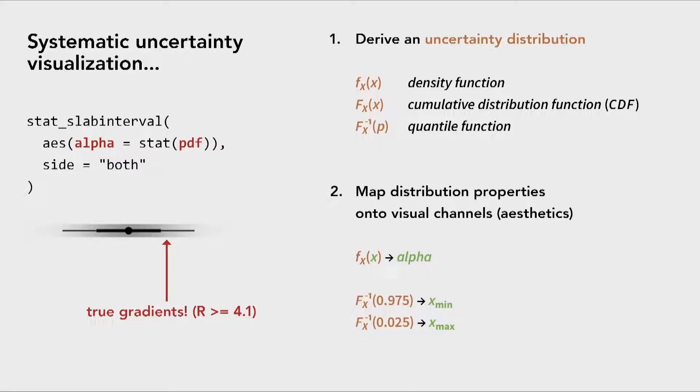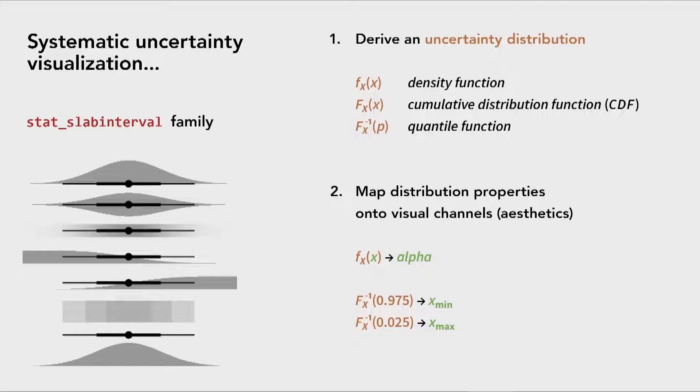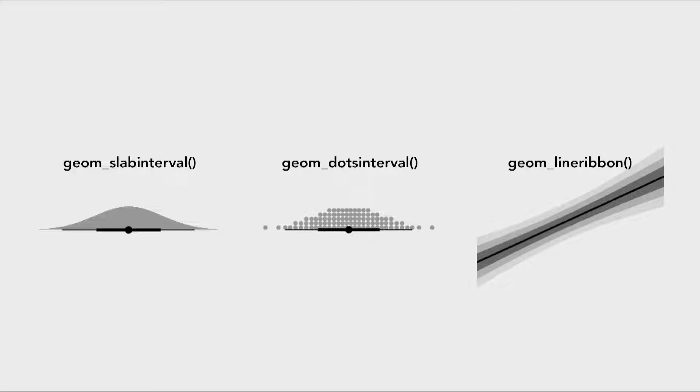We can create a whole variety of different geometries just from this same slab interval family. ggdist provides a bunch of shortcut geometries, but they're all really derived from the same core geometry. Of course, the dots interval and line ribbon are similarly flexible. You can do a bunch of cool different things with them, but I don't really have time to get into the details of how you would do all of those different things.